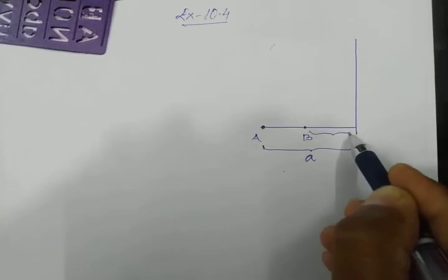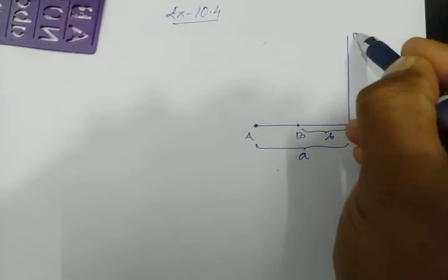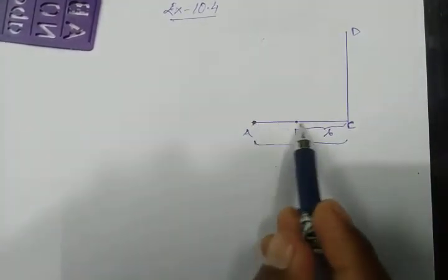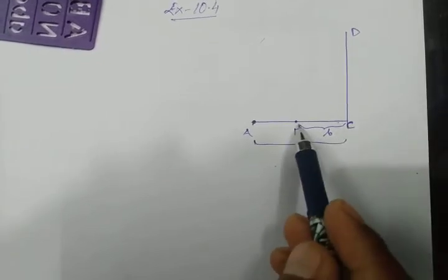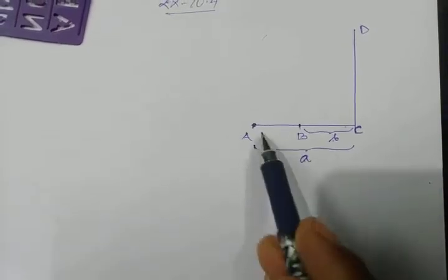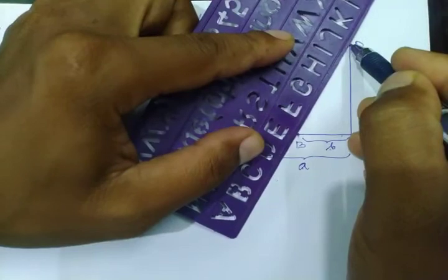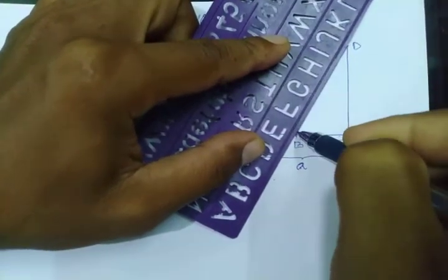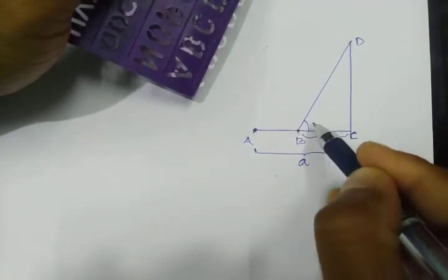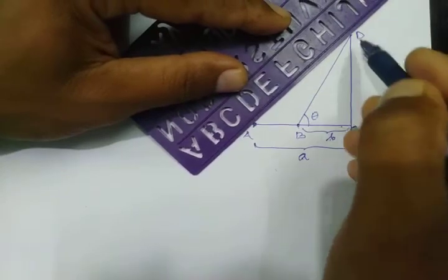Let's say the points are A and B. Point A is at a distance of small letter a from the tower, and point B is at a distance of small letter b from the tower, the tower being CD. From these two points we are observing the top of the tower. Let's say this is the line of sight, and this is the angle of elevation from B — let's call it theta.